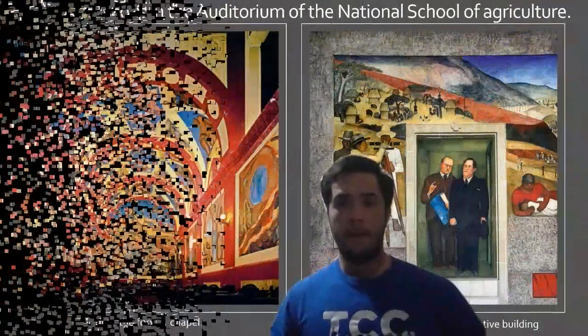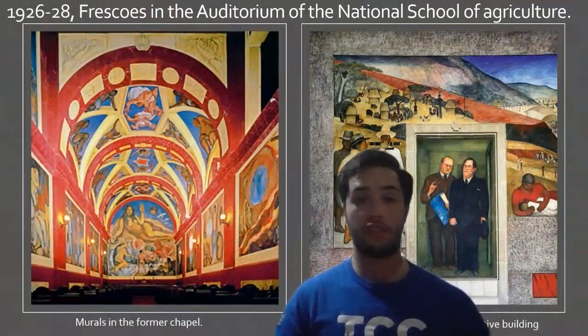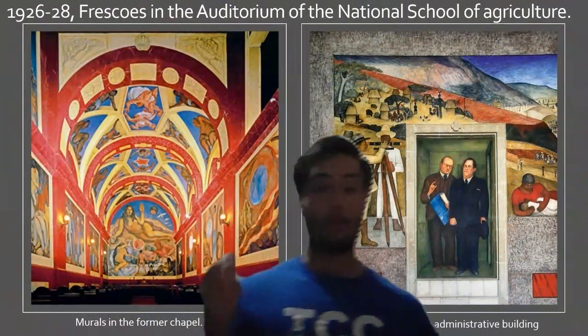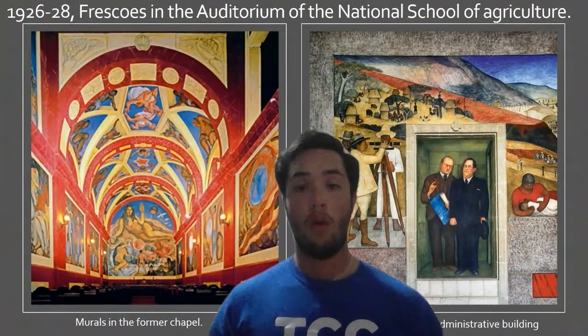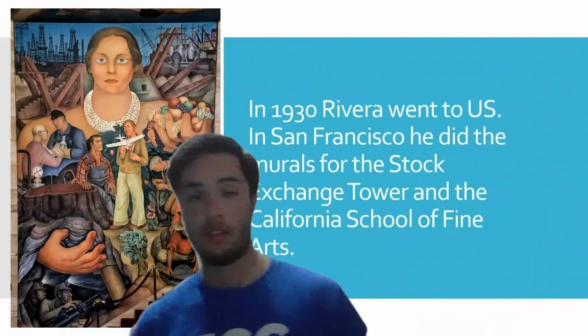From 1926 to 1928 he executed frescoes in the auditorium of the National School of Agriculture, all around the building. My two favorites are the murals in the former chapel, which is now a museum, and the murals in the administrative building.